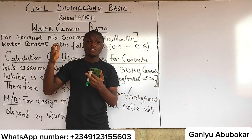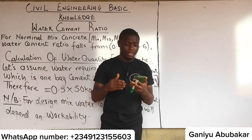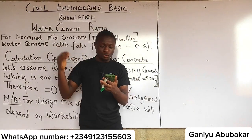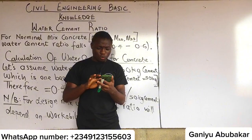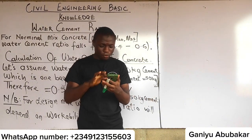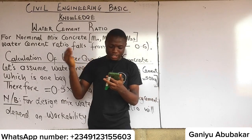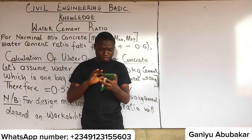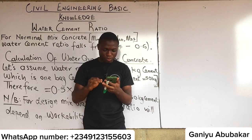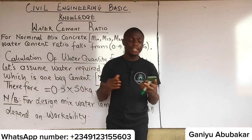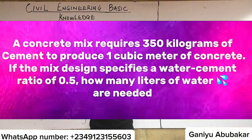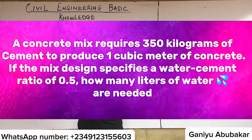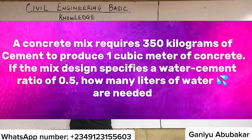I'll now share a calculation sent to me by a student who asked me to help calculate the amount of water needed for their work. The question states: a concrete mix requires 350 kg of cement to produce one cubic meter of concrete. If the mix design specifies a water cement ratio of 0.5, how many liters of water are needed?